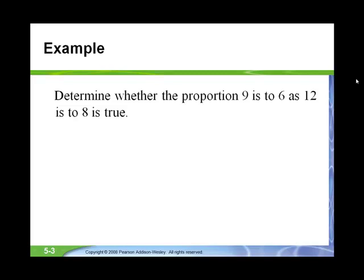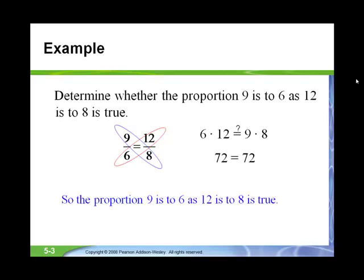Determine whether the proportion is a true proportion. 9 to 6 is your first ratio, and 12 to 8 is your second ratio. We can reduce both fractions or do cross multiplication. We multiply across: 9 times 8 and 6 times 12. If those two products are equal, it's a true proportion. 6 times 12 is 72, and 9 times 8 is 72. So yes, the proportion 9 to 6 and 12 to 8 is a true proportion.